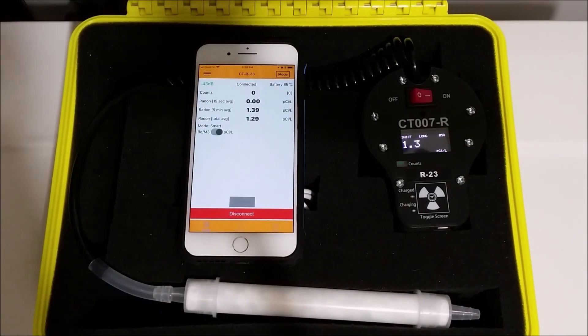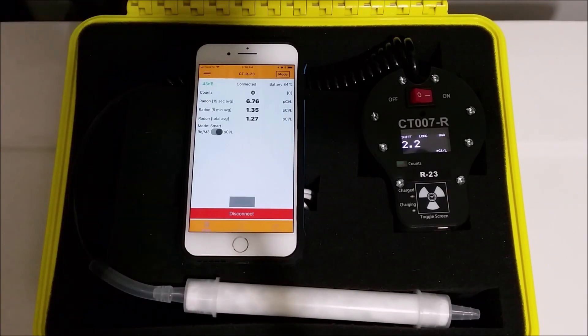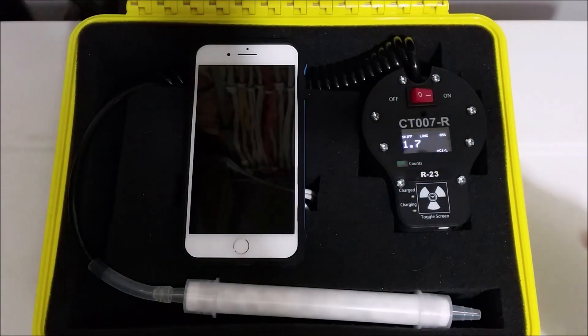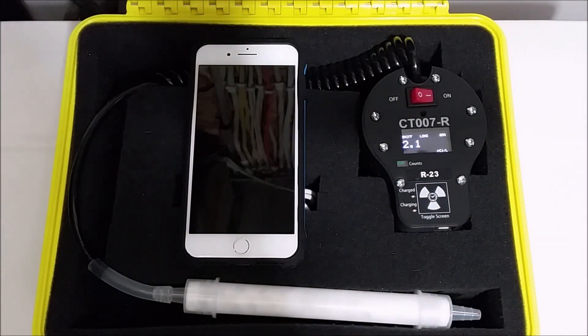We have just set up in the basement. We will let our detector run for the next 30 minutes or so, then check it for higher readings. This screen here shows us the 15 second average or the short average, the 5 minute average or the long average, and the average since we have turned it on. You can also turn your phone's screen off to save your battery. However, both the phone and the detector must remain on.